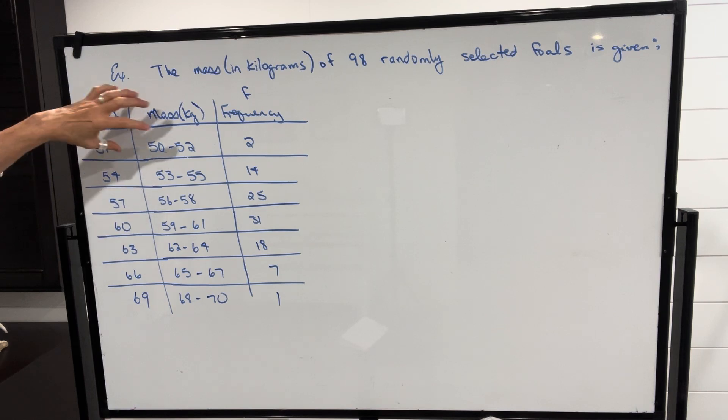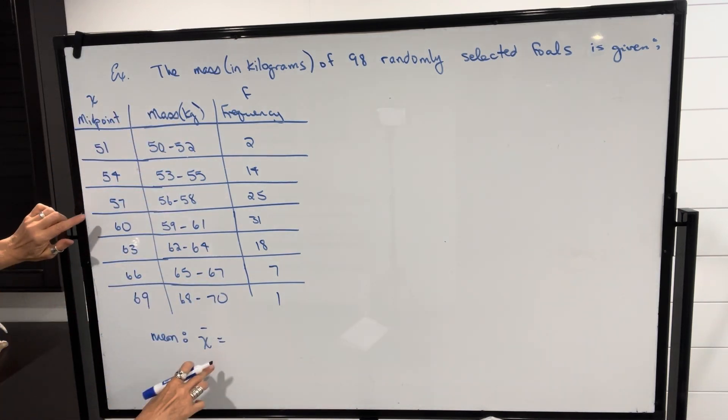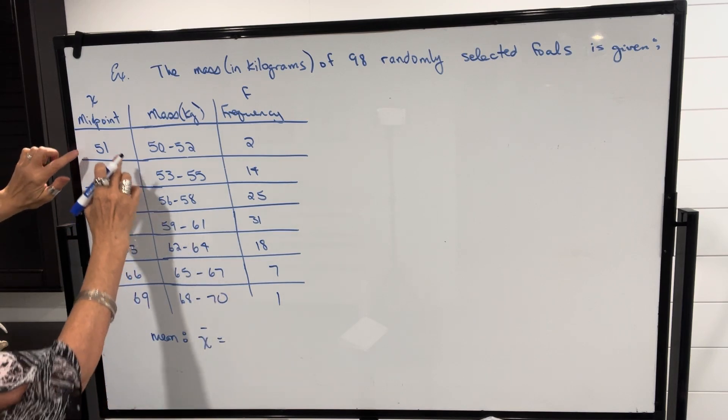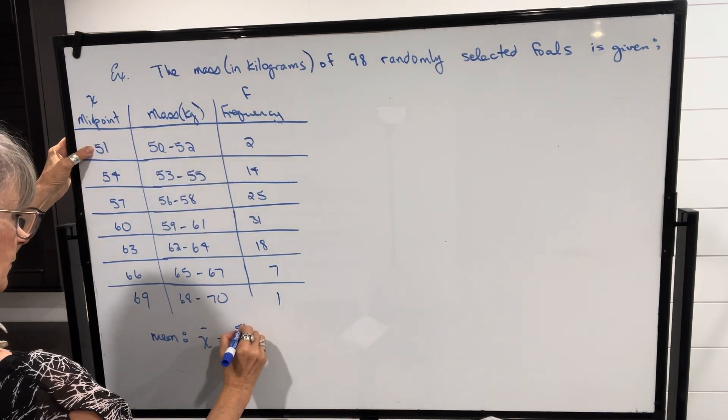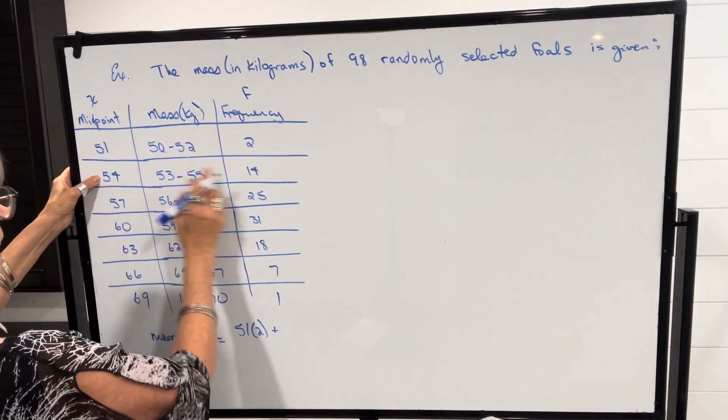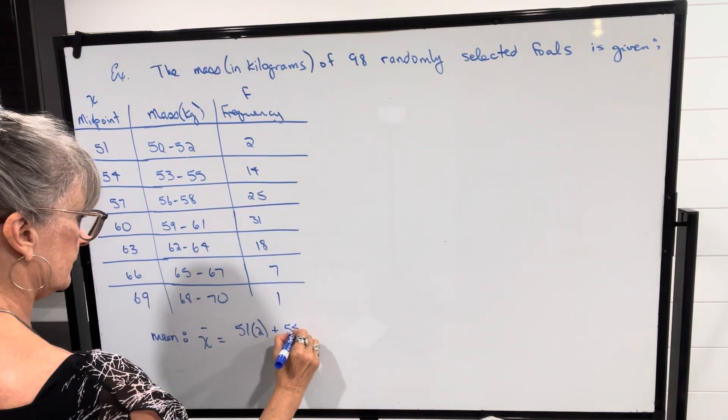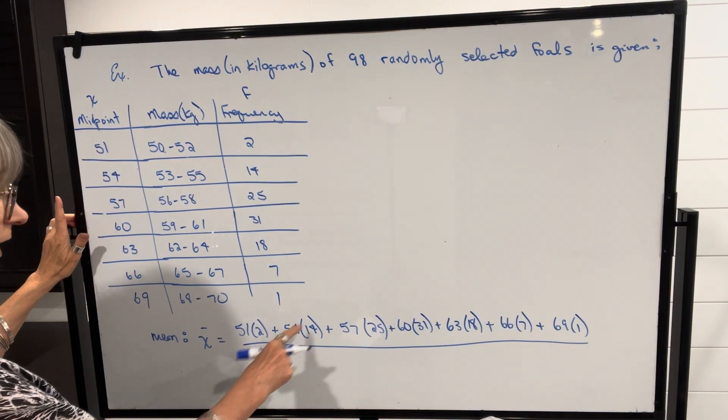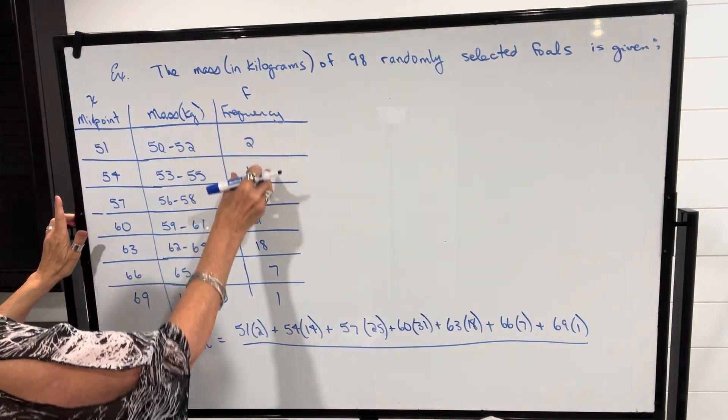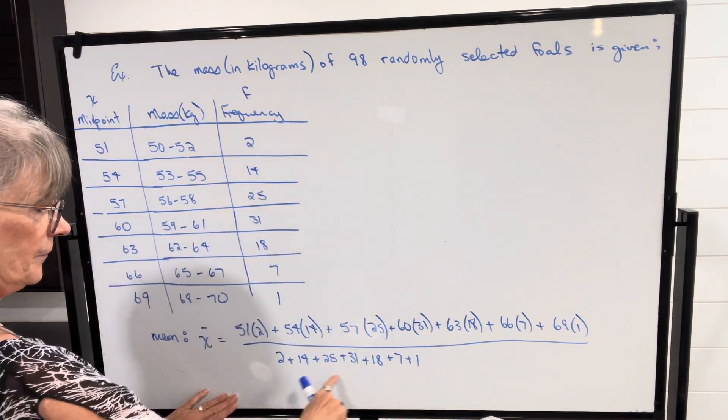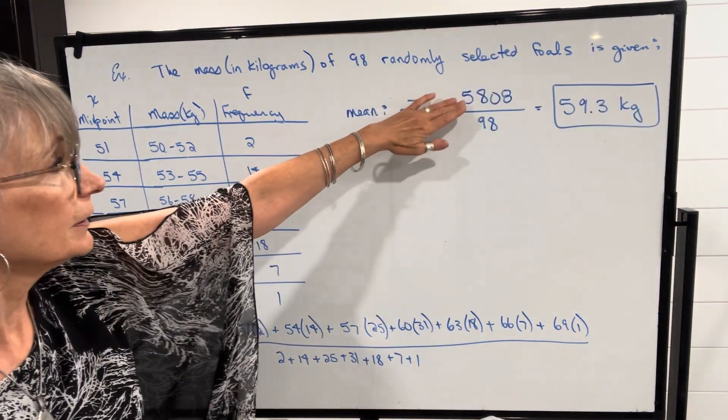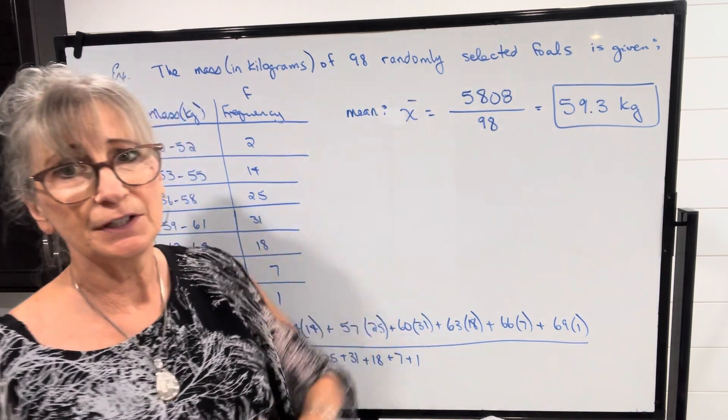And we're going to use that number as our x and this number as our frequency. We're basically going to ignore the range of values when we calculate the mean. So for the mean, I'm going to take the sum of the x values times the frequencies, 51 times 2 and so on, 54 times 14. Then I'm going to divide by the sum of the frequencies, which I know should be 98. And when I calculate everything, I get a mean of 59.3 kilograms.